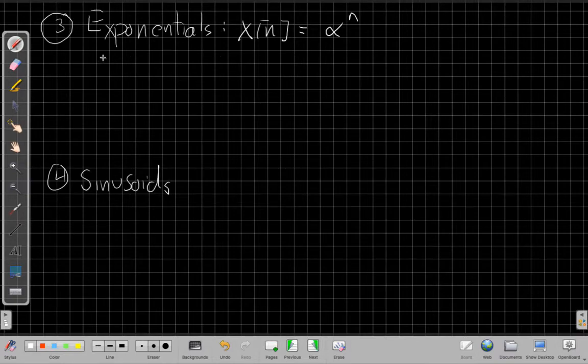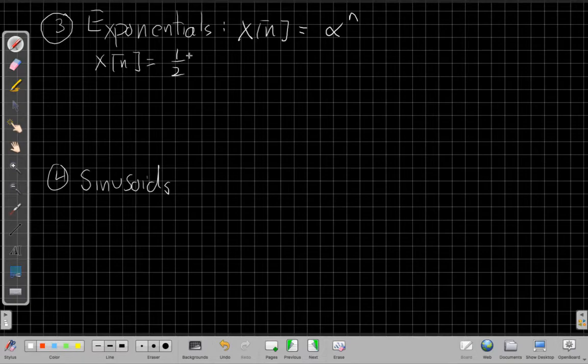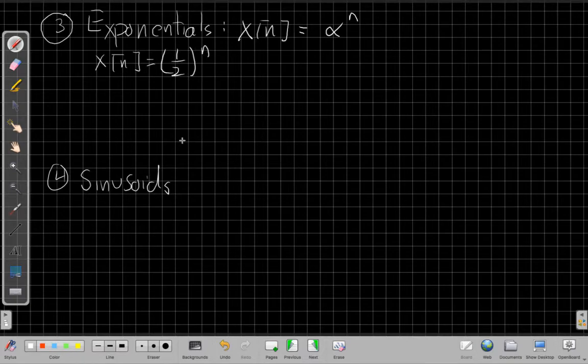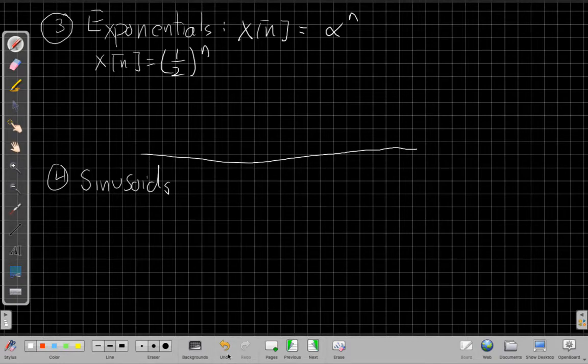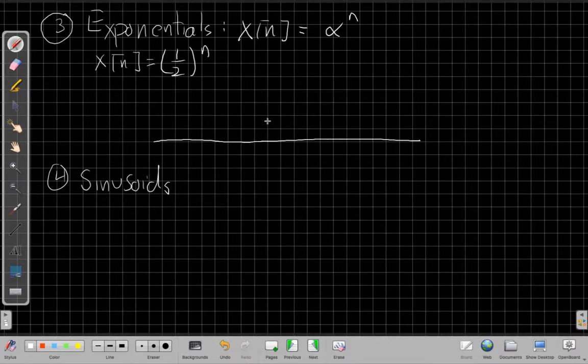For example, if I have x of n is equal to, say, a half to the n, it would be a very simple exponential signal. This is a signal. If I sort of sketch some of this. Let me try that again. That was a terrible line. Much better. So we might say this signal here, we'll just plug in each value of 0. When n equals 0, it will be height 1.